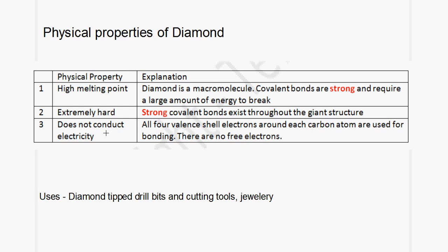Third physical property: diamond does not conduct electricity. All four valence shell electrons around each carbon atom are used for bonding, so there are no free electrons. The uses of diamond include drill bits and cutting tools, because diamond is very hard, and it is also used in jewelry.